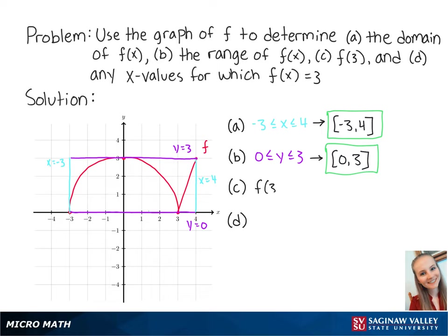For letter c, f of 3 is the value of the function when x is equal to 3. Looking at the graph, we can see that when x equals 3, y is 0. This means that f of 3 is equal to 0.